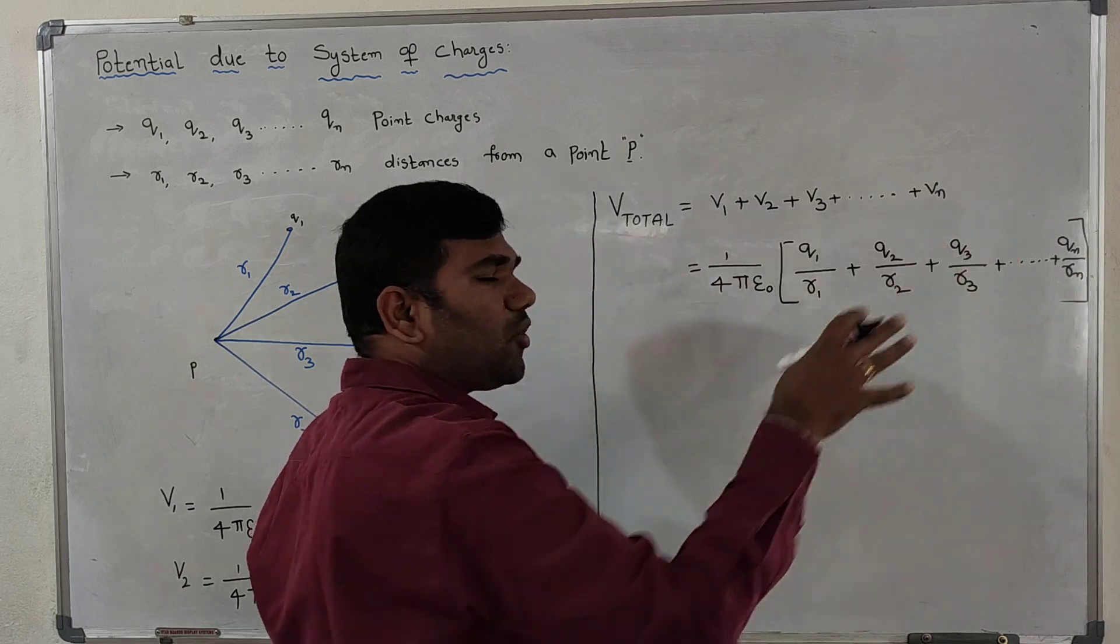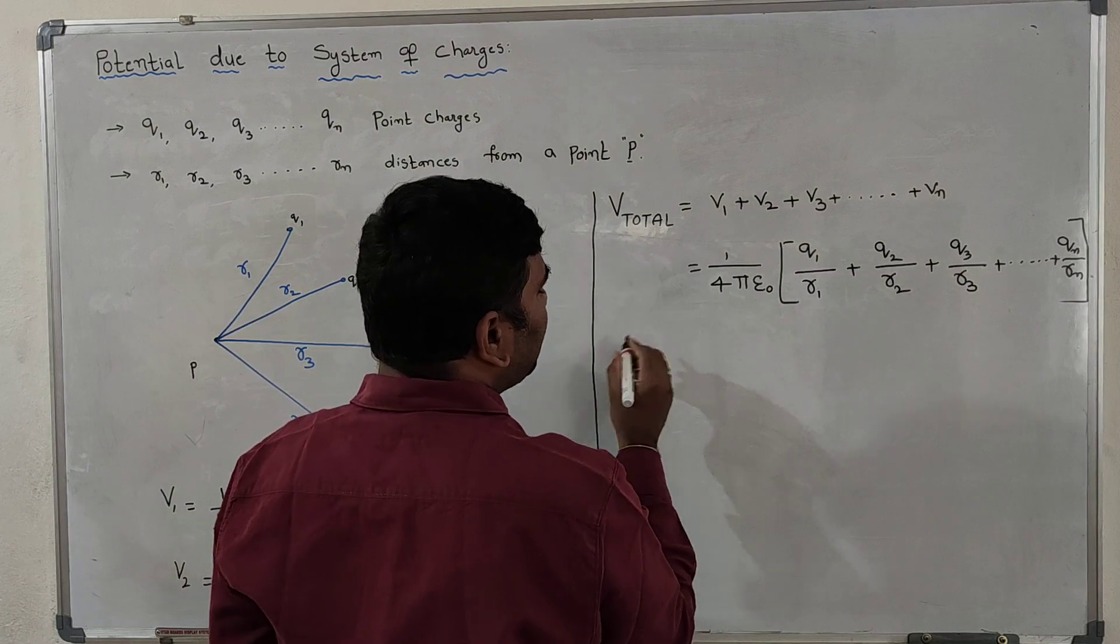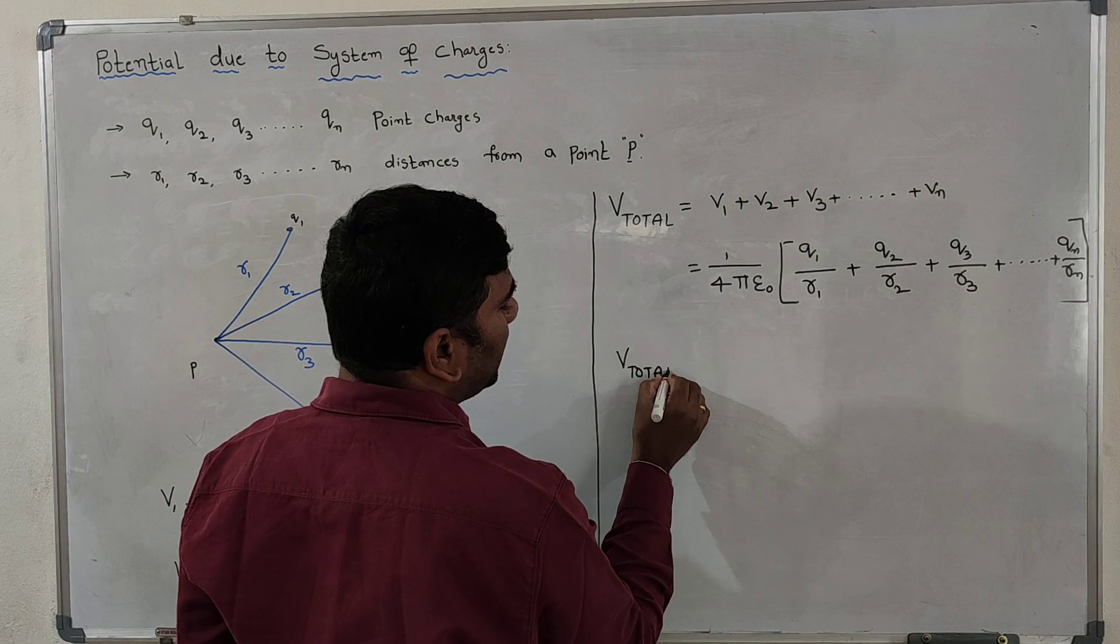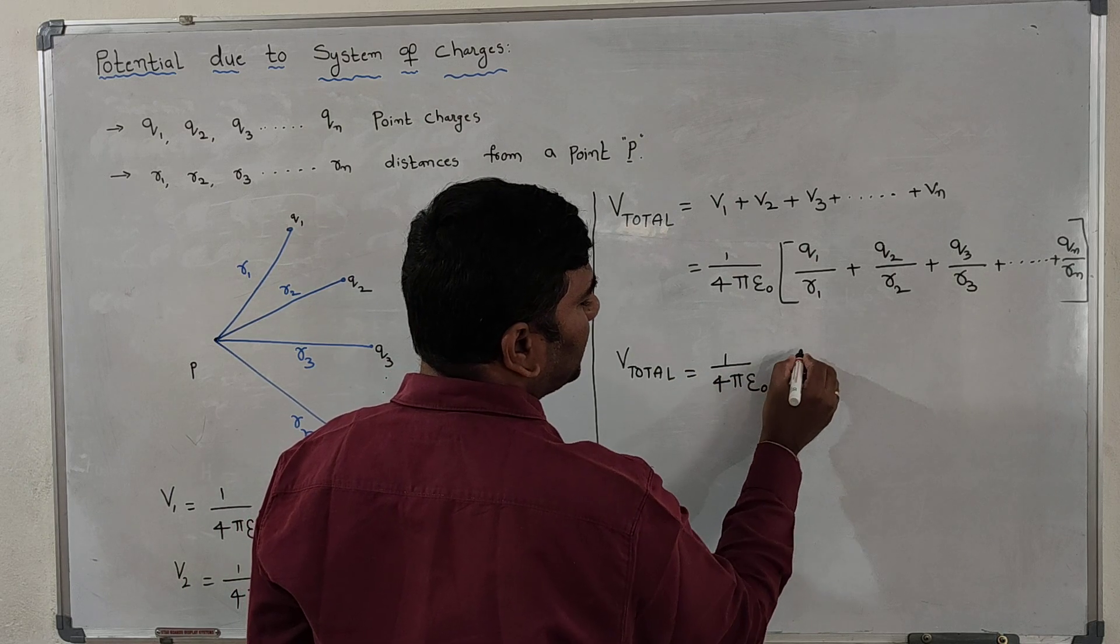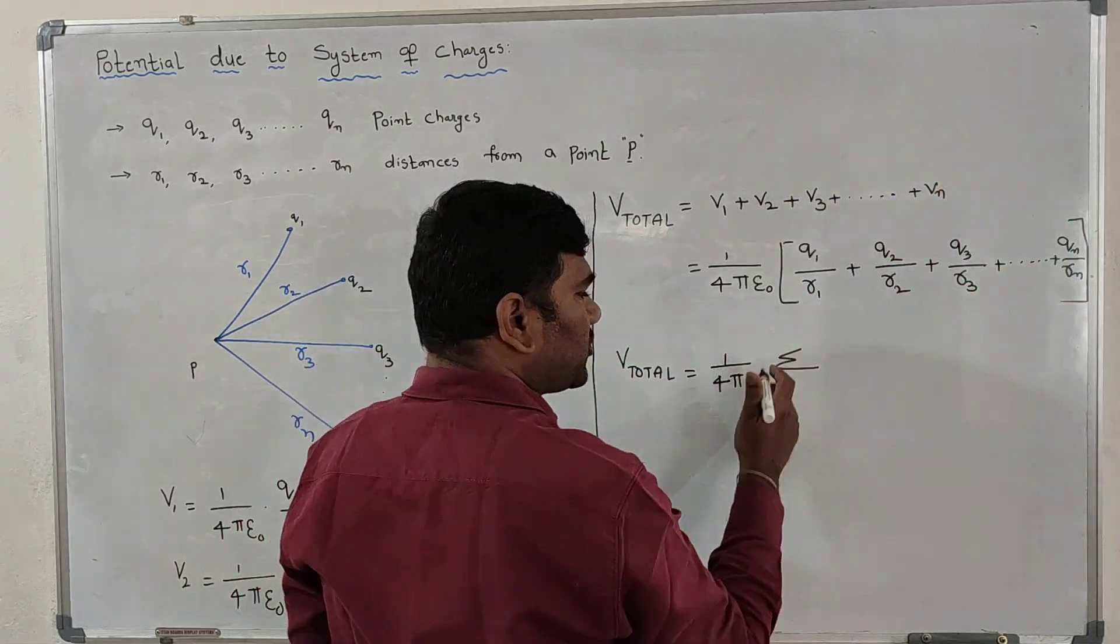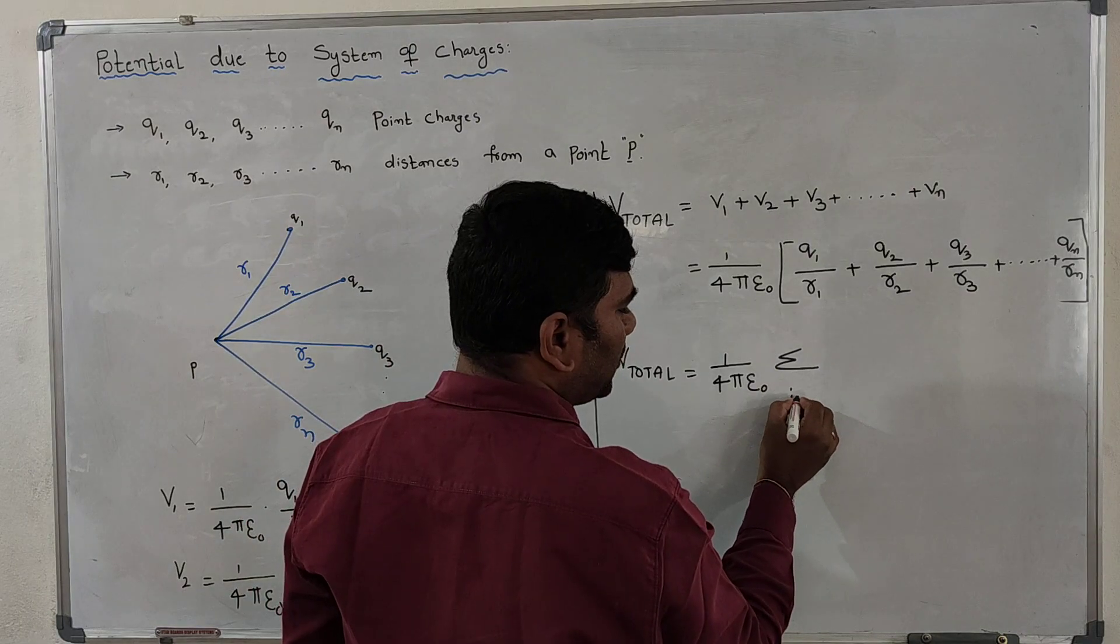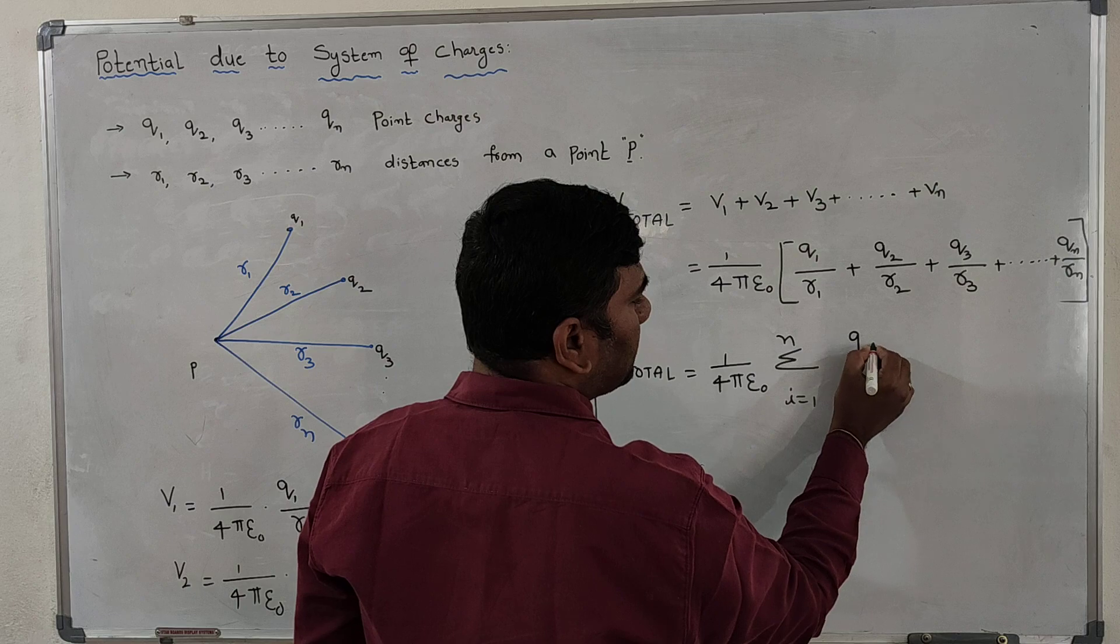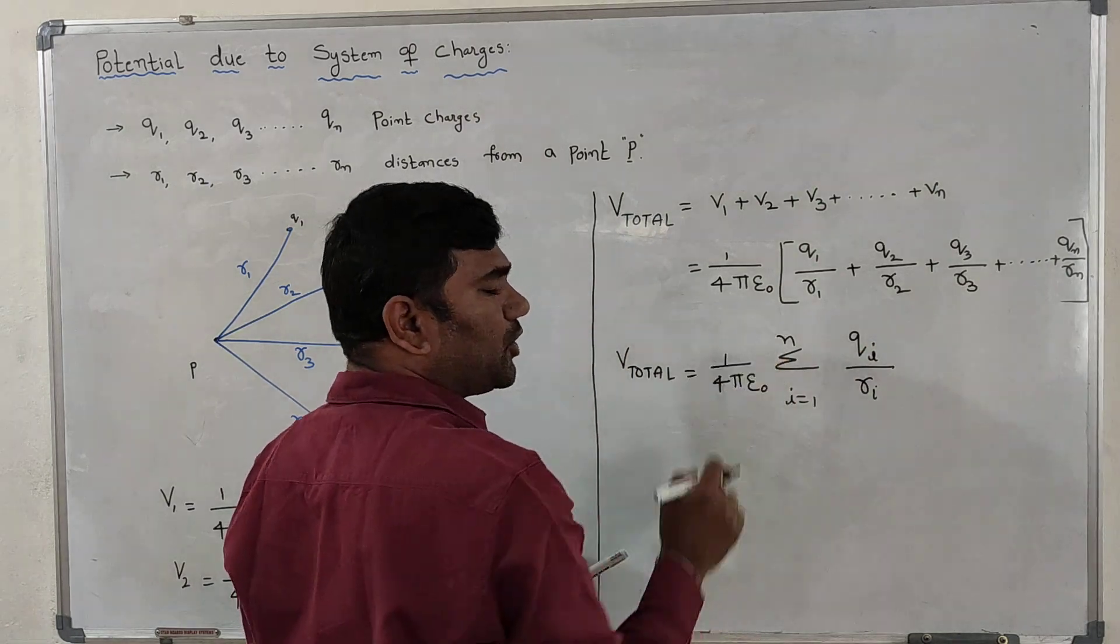Now this is our algebraic sum, it is just addition of all the numbers. If we rearrange, V total is equal to 1 by 4πε₀, summation of all these terms. We can write this as summation of Qi by Ri, where i equals 1 to n.